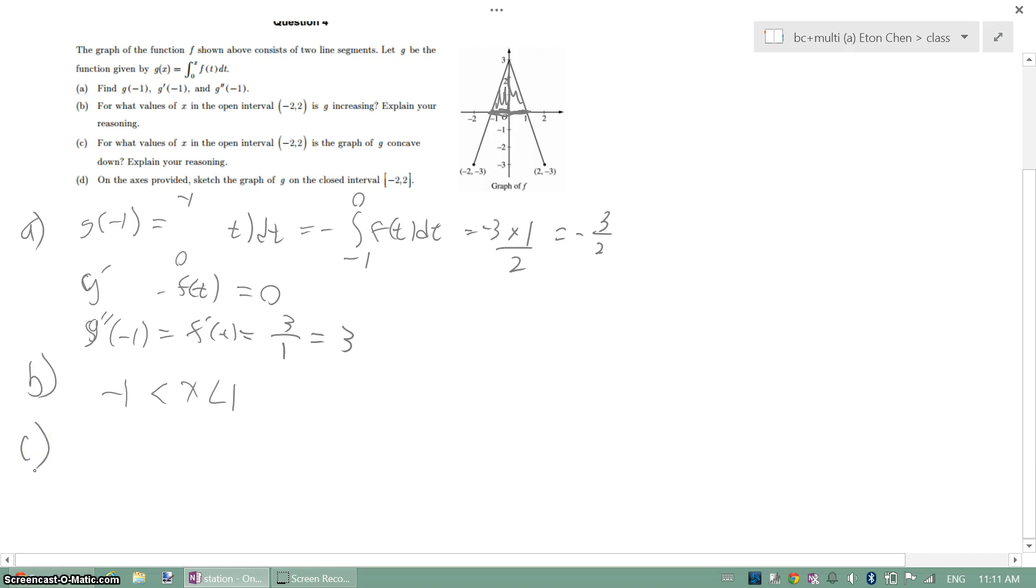For what values of x in the open interval negative 2 to 2 is the graph of g concave down. When we are asked for the concavity of g, it is asking us what's the second derivative of g. And the second derivative of g is just the derivative of f. So we are just looking for the parts where the derivative of f is decreasing.